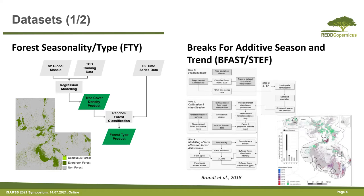On the other side, we have also the BFAST steps which have been applied on our study sites in Kenya, with different steps of pre-processing, using time series analysis for detecting anomalies within this time series, and further steps including classification, calibration, and modeling.